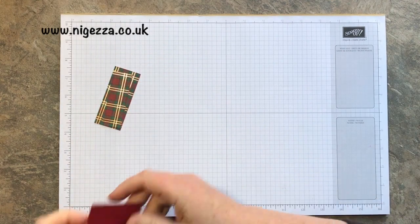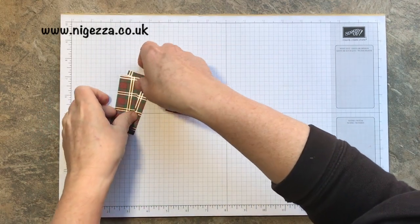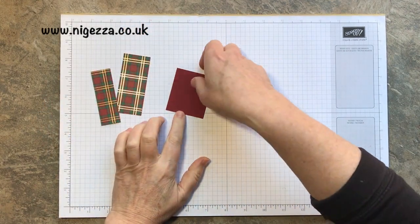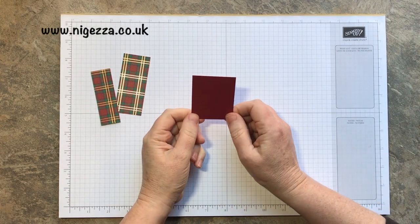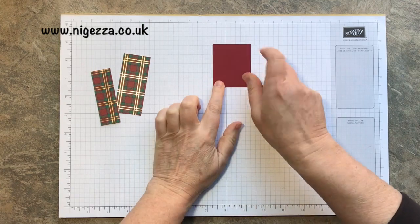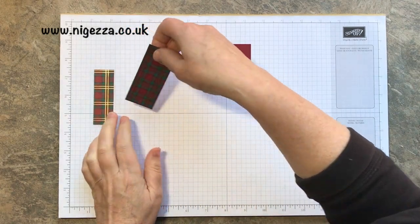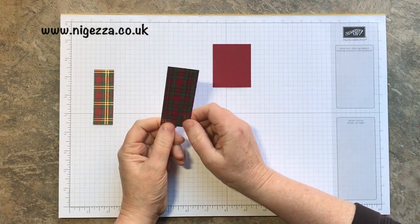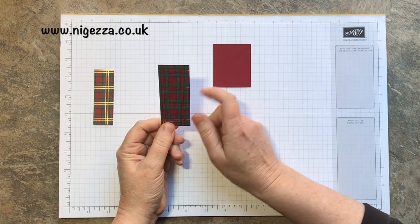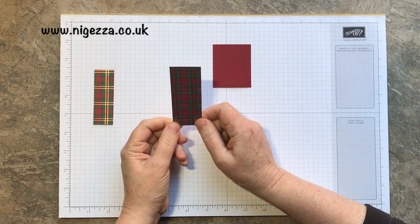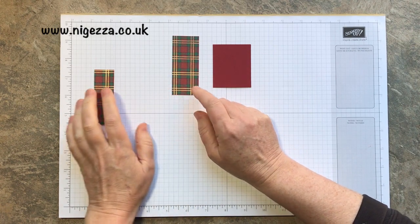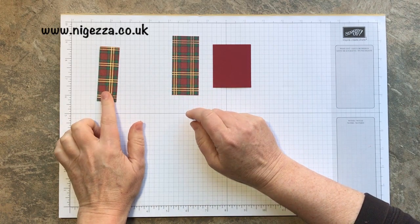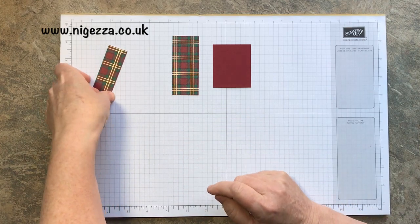You don't need very much for this project. For the base, you need Cherry Cobbler cardstock 2 3/8 by 2 inches. I'll put the metric measurements on my blog. For the wrap, you need 1 3/8 by 3 1/4 inches, and for the Hershey Nugget wrapper, that's 1 by 3 inches.